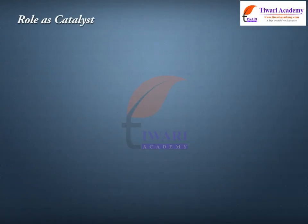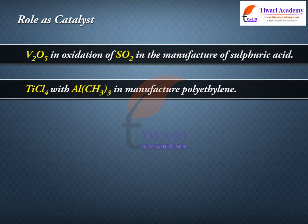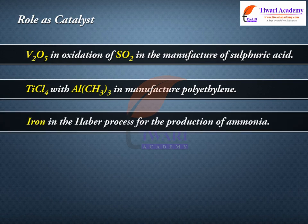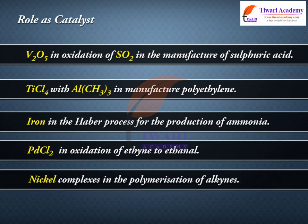Role as catalyst: V2O5 is used in the oxidation of SO2 in the manufacture of sulphuric acid. TiCl4 with AlCl3 is used in the manufacture of polyethylene. Iron is used in the Haber process for the production of ammonia. PdCl2 is used in the oxidation of ethane to ethanol. Nickel complexes are used in the polymerization of alkynes.